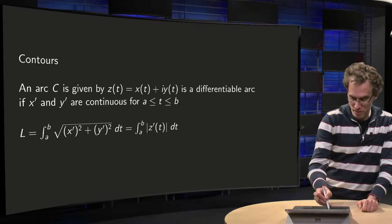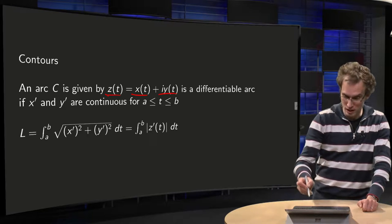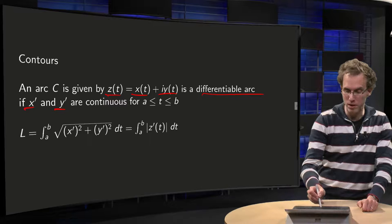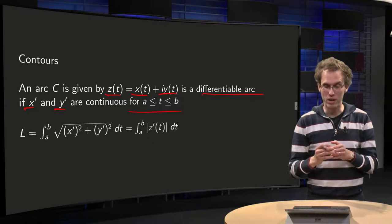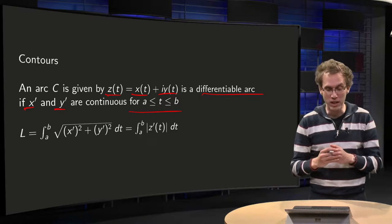An arc is given by z is called a differentiable arc if x' and y' are continuous for t between a and b. Then we have a differentiable arc.